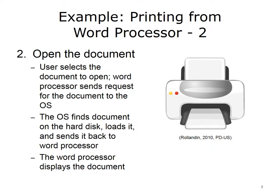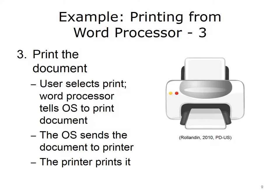After the program has started, you find and open the file you want to print. The word processor requests the file from the OS. The OS finds the file on the hard drive, loads it into memory, and sends the information back to the word processor. The word processor then displays the document. When you select the menu option to print, the word processor sends a request for a print job to the OS. The OS sends the document to the printer, and the printer prints it.